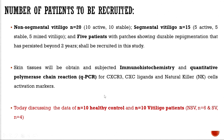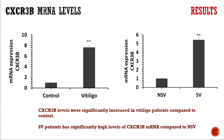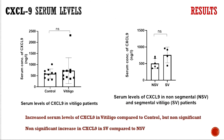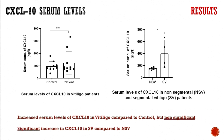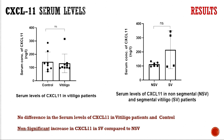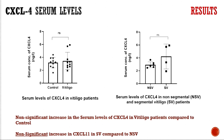Today I am presenting data from 10 healthy controls and 10 vitiligo patients, comprising 6 non-segmental and 4 segmental vitiligo. Results show increased CXCR3B mRNA expression in vitiligo patients, with segmental vitiligo showing higher expression compared to non-segmental patients. For CXCL9, no significant difference was found. For CXCL10, there is a significant increase in segmental vitiligo compared to non-segmental vitiligo. ELISA for CXCL11 showed no significant difference but levels were increased in segmental vitiligo. Similarly, for CXCL4, no significant difference was found but levels were increased in segmental vitiligo.